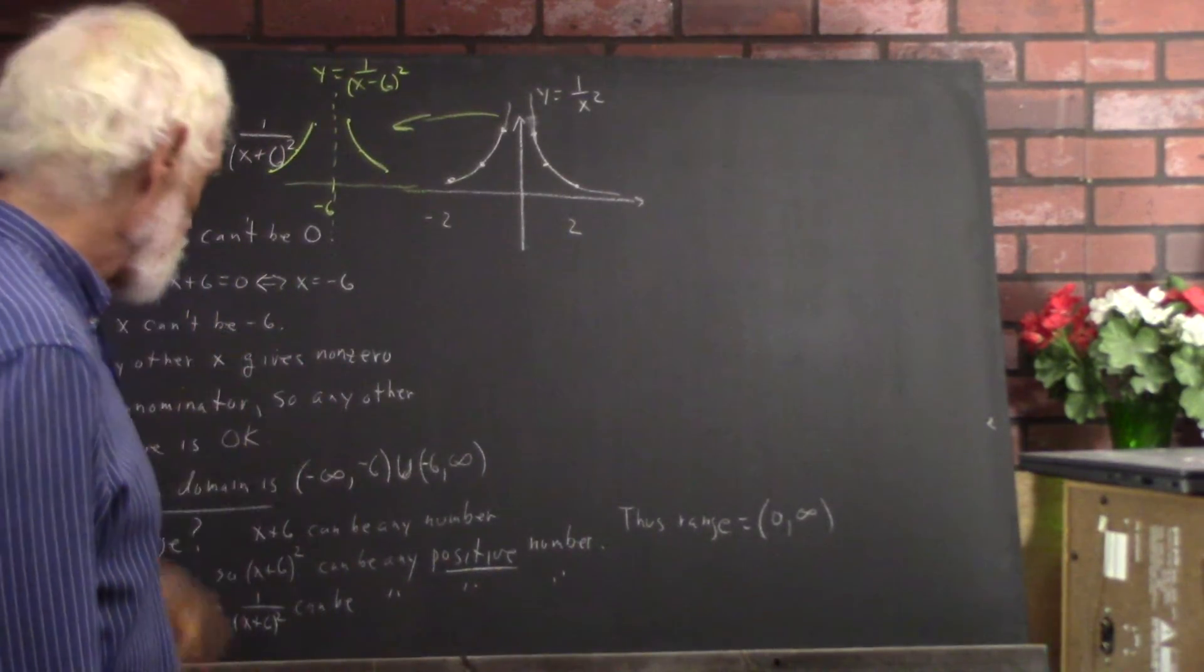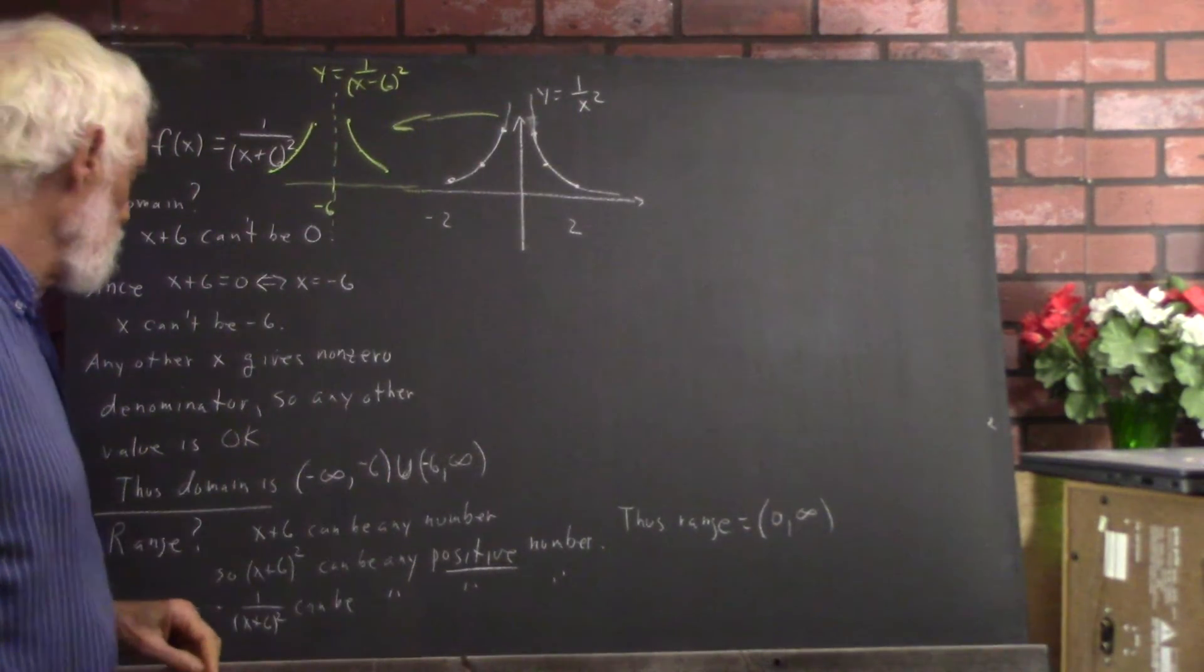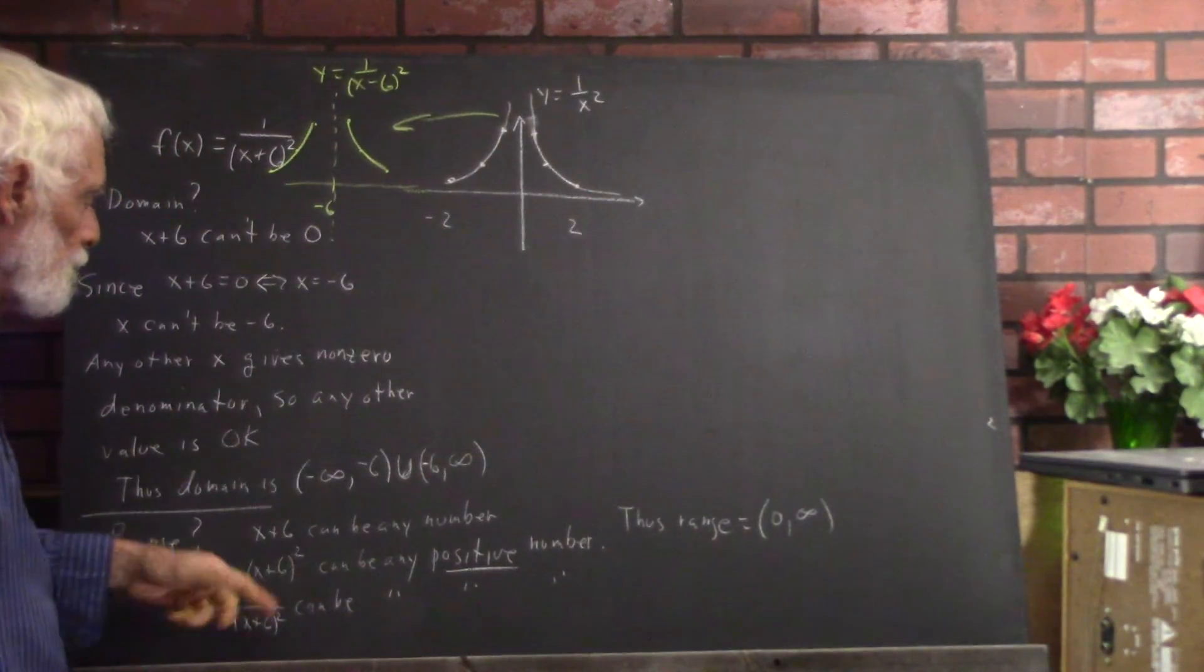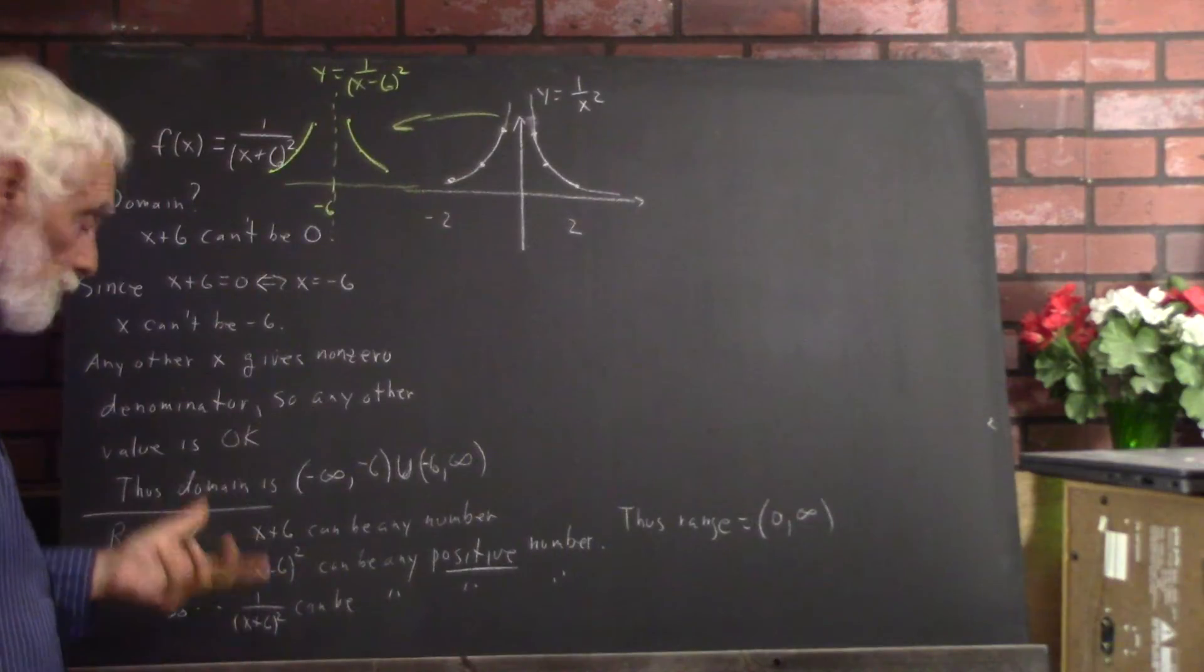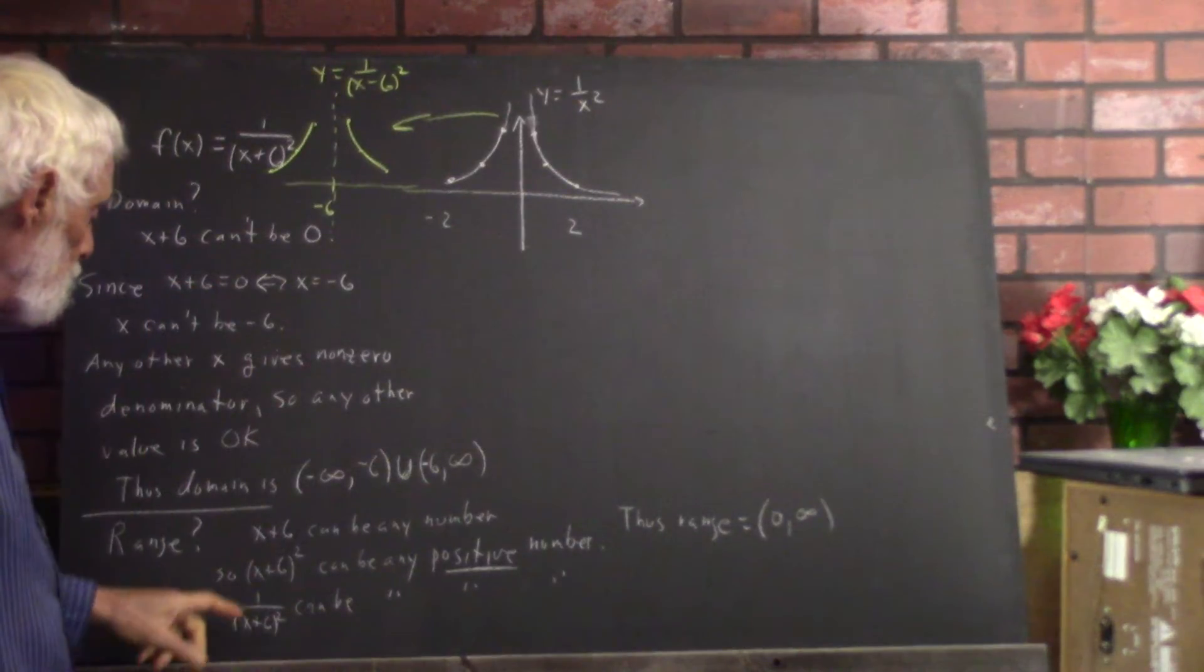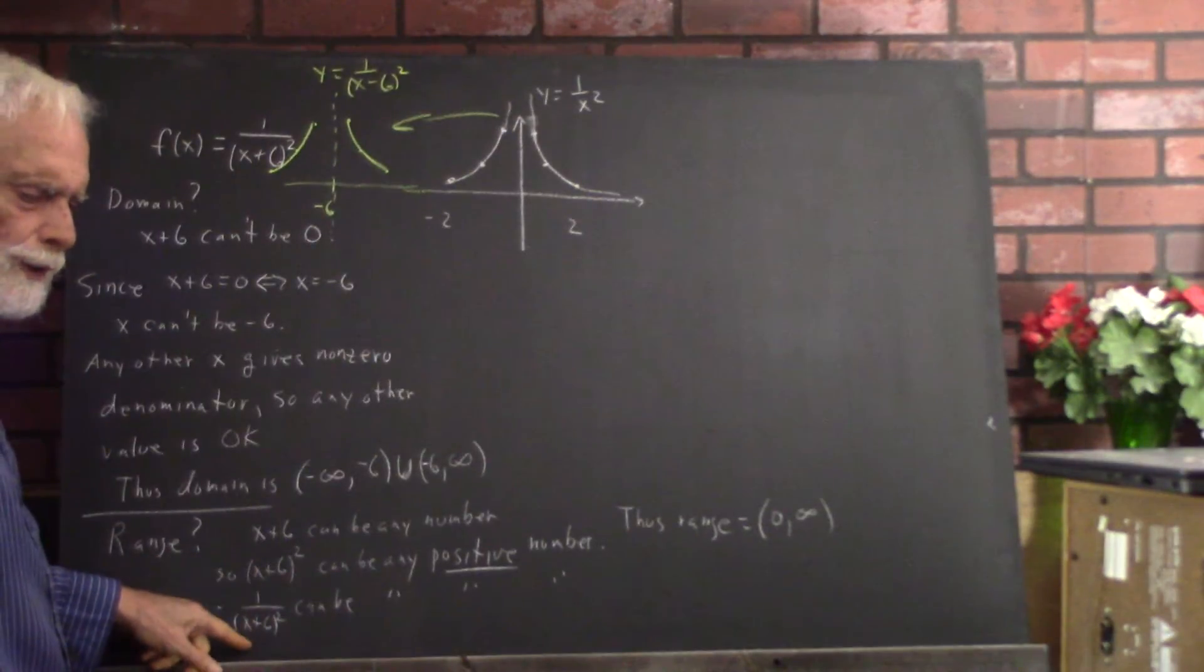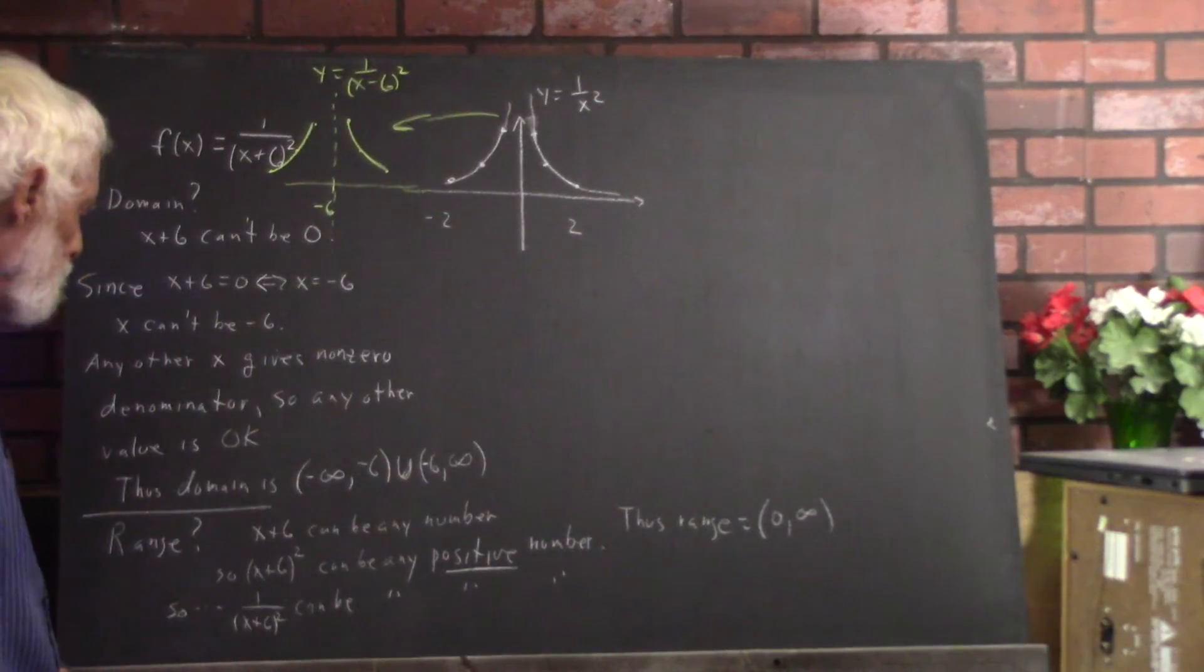And to make that plausible without actually proving it rigorously, which you can get from examples in your book and so forth, x plus 6 squared can be any number other than 0 within the domain. So it can be any really small number close to 0, which means that its reciprocal can be as big as you like. Because if you divide by a number as small as you like, the result is going to be as big as you like.